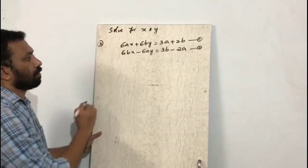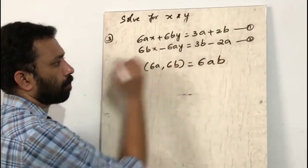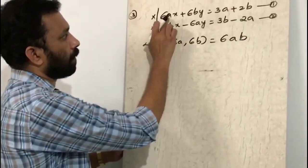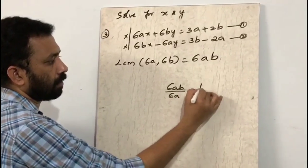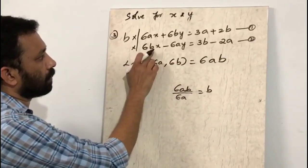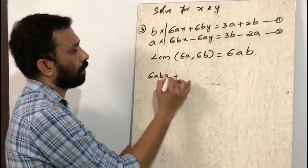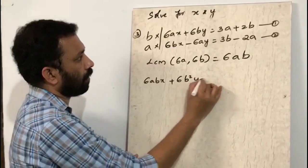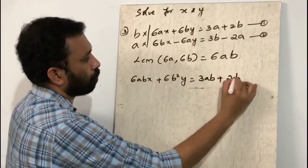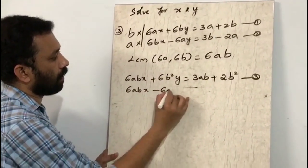Third question: the LCM of 6a and 6b is 6ab. Multiply the first equation by b (6ab ÷ 6a = b) and the second by a (6ab ÷ 6b = a). Multiplying: 6abx + 6b²y = 3ab + 2b². This is equation 3.